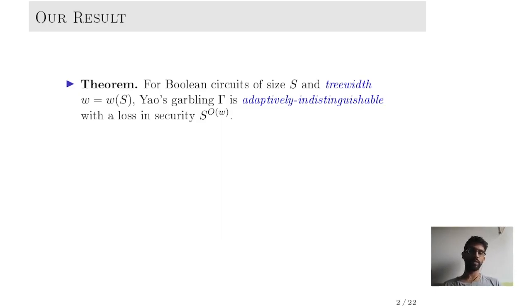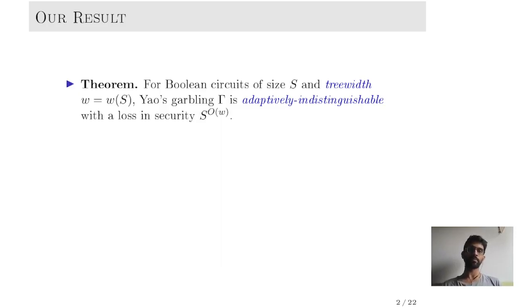So what is tree-width? Tree-width is a notion from algorithmic graph theory and it is informally a measure of how far the circuit is from a boolean formula, or more generally how far the graph is from a tree. It is also worth pointing out that the loss in security is with respect to the underlying symmetric encryption scheme.